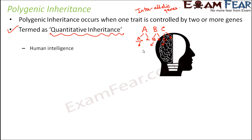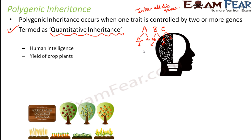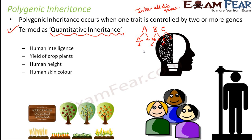Some examples of polygenic inheritance are human intelligence, yield of crop plants, human height, and human skin color. Skin color is a very good example to understand polygenic inheritance. The kernel color in wheat was the primary example — the first time polygenic inheritance was described was based on an experiment performed with kernel colors in wheat.